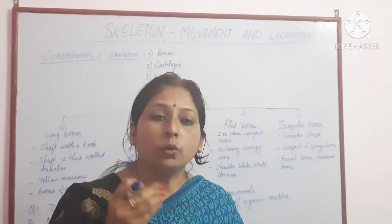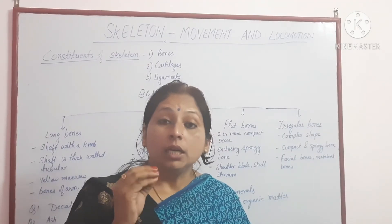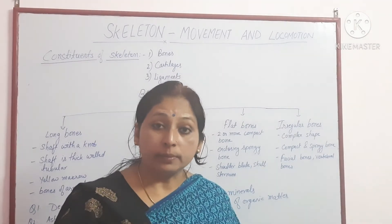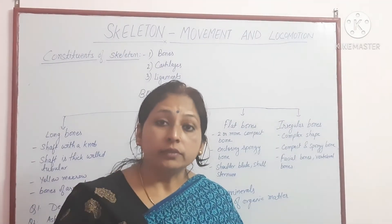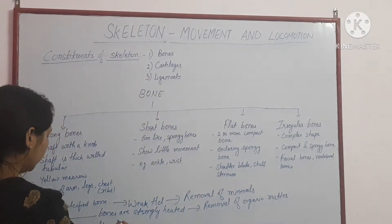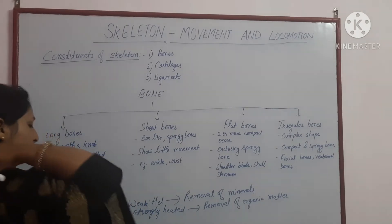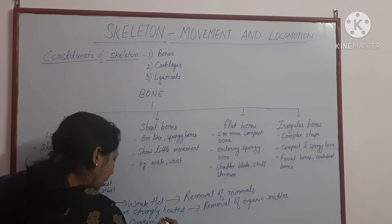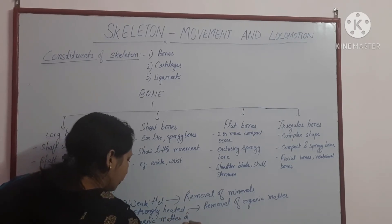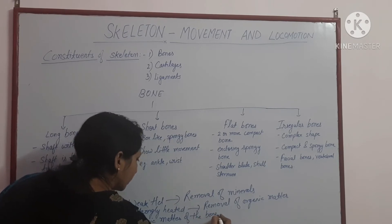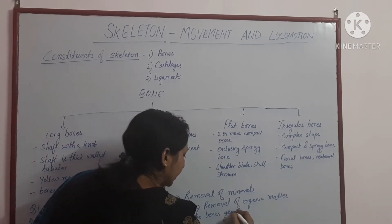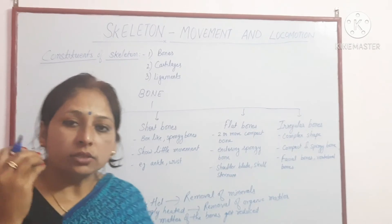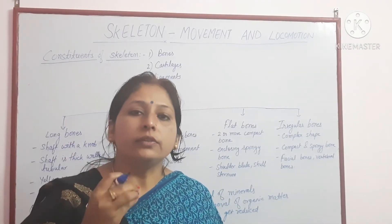A one-mark question: why are bones in elderly people brittle and fragile, and why does fracture recovery take longer? The reason is that with old age, the organic matter of the bones gets reduced, resulting in fragile bones and late recovery from fractures.